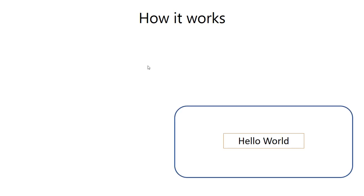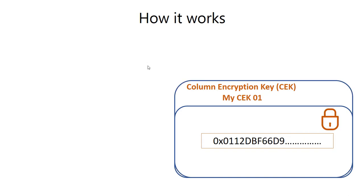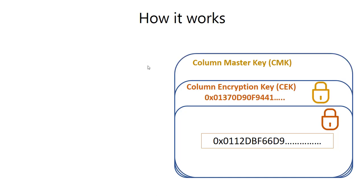Let's see how it works. Assume you have a value stored in one of your tables and you want to make sure this value is encrypted — no one can read it. This value will be encrypted using the Column Encryption Key, for example named MyCEK01. So once encrypted, no one can read it. But if somebody has access to MyCEK01, they can decrypt it. So we protect MyCEK01 using the Column Master Key, and once the Column Master Key is applied, the Column Encryption Key is protected.